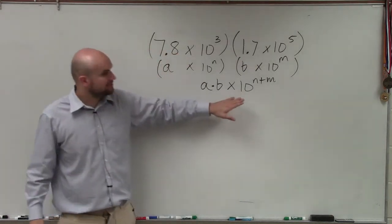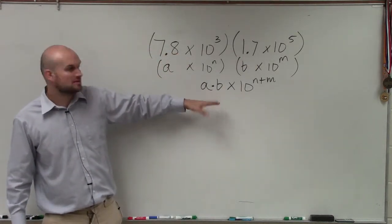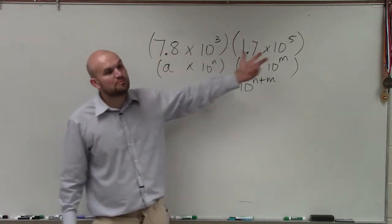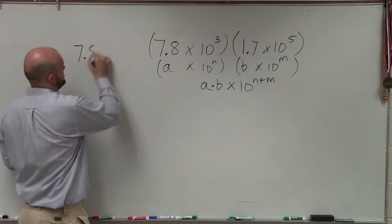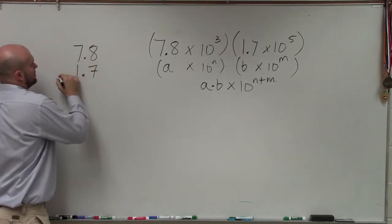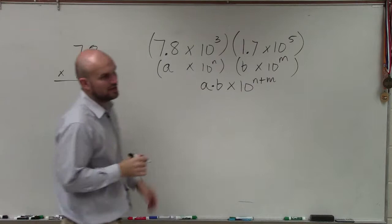So then we just multiply our two front numbers. In this case, I need to multiply 7.8 times 1.7. Going back to what we did on our first test, we're going to multiply those two numbers.